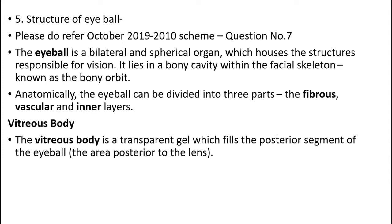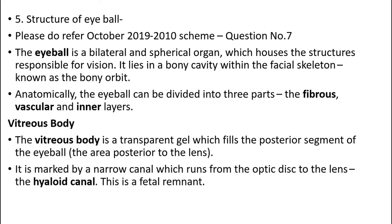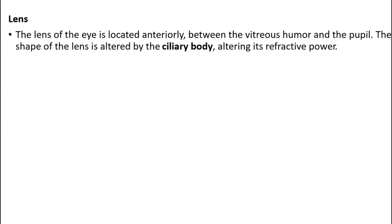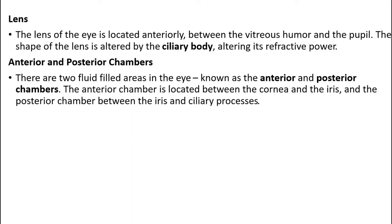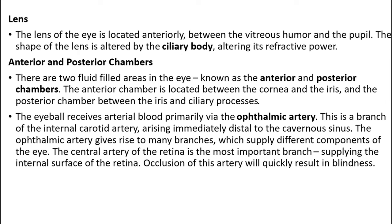The structures within the eyeball consist of the vitreous body. The vitreous body is the transparent gel which fills the posterior segment of the eyeball, marked by a narrow canal running from the optic disc to the lens — the hyaloid canal, which is a fetal remnant. The lens is located anteriorly. There are also anterior and posterior chambers: two fluid-filled chambers, the anterior between the cornea and iris, and the posterior between the iris and ciliary process.